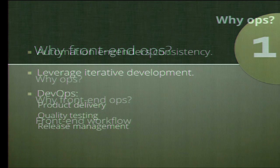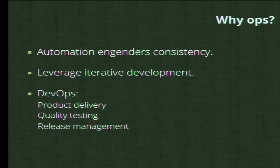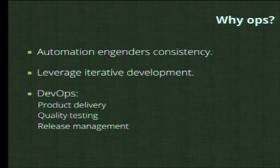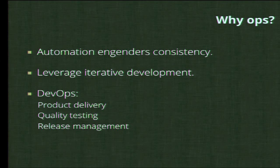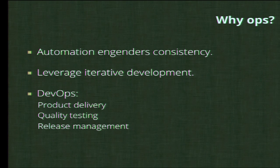Why ops? The key thing about automating your tasks and workflow is that automation engenders consistency. It means that any time you run a task, it's always going to be the same no matter what. Back in the 90s or early 2000s, we didn't have any of these tools. Putting a typo in your JavaScript or CSS was something very hard to catch. We now have a lot of tools available that help us alleviate the impact of those problems.